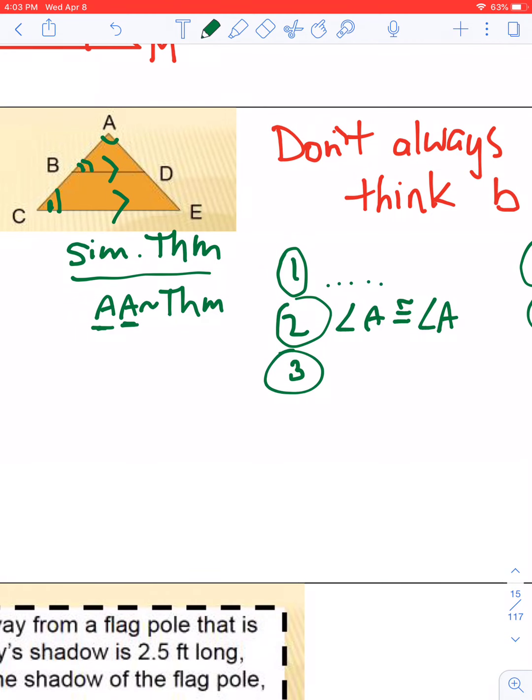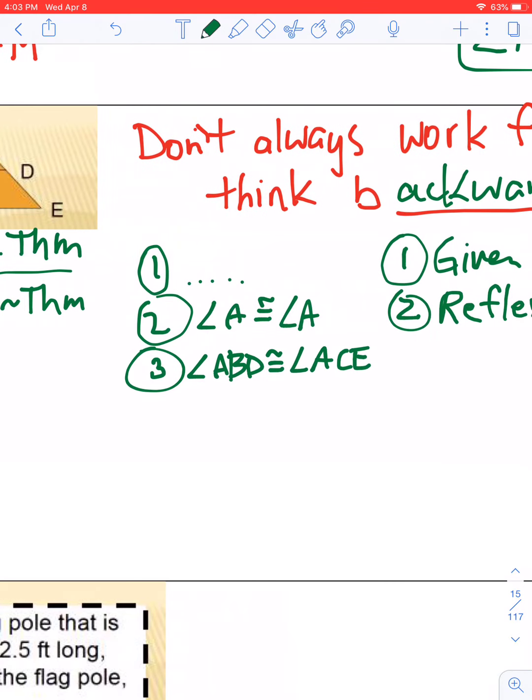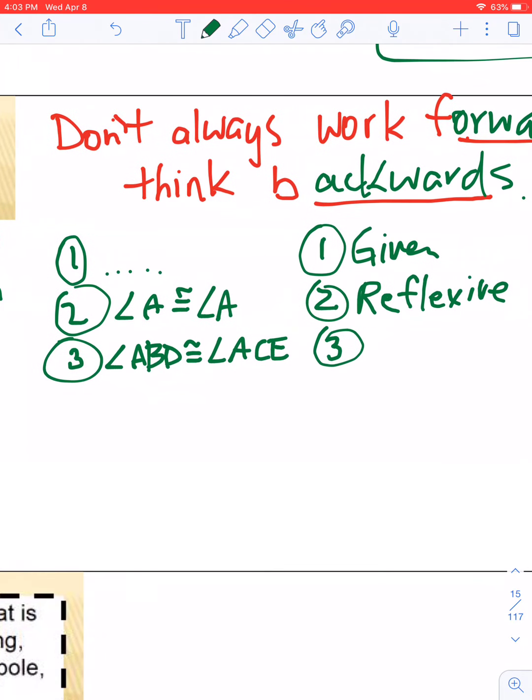And again, angle ABD—I could have named those with numbers to make my life a little bit easier—and ACE are congruent. And that's the corresponding angles.